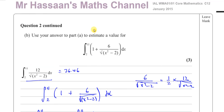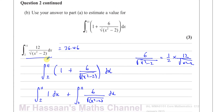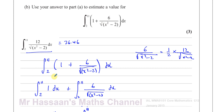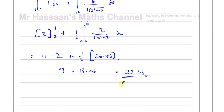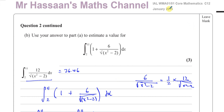All these types of questions are very similar: you've used the trapezium rule to find an approximate value of something, and then you have another expression related to it. You modify it to express it in terms of what you already have — here, in terms of 12 over the square root of x squared minus 2 — and replace that with 26.46. That's the answer to question 2B of January 2015. Other questions from this paper and from the trapezium rule topic can be found in the playlists appearing on screen. You can also subscribe to the channel. Thank you for watching, and see you soon.